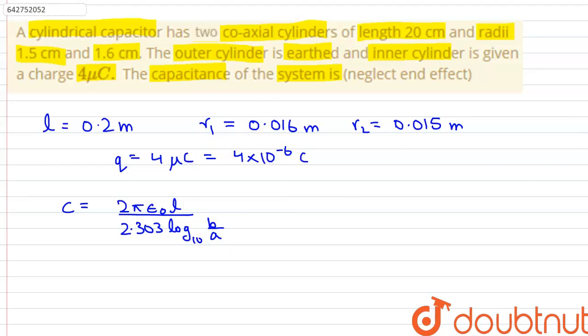all of these values in this equation, we can rewrite this as C equals 2 × π × 8.854 × 10^-7 multiplied by 0.2, divided by 2.303 × log₁₀